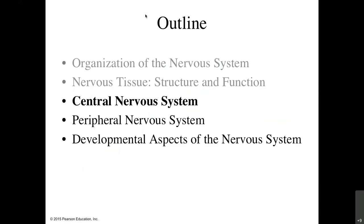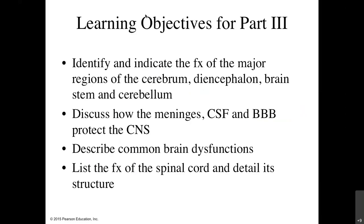Now let's talk about the central nervous system. Our objectives for this part are to identify the major functions of the major regions of the cerebrum, diencephalon, brainstem, and cerebellum; to discuss the different ways we protect our central nervous system; to cover brain disorders and dysfunction; and finally, to talk about the spinal cord and its structure.